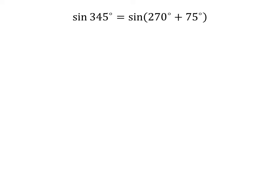345 degrees is equal to 270 degrees plus 75 degrees. So, sine of 345 degrees is equal to sine of 270 degrees plus 75 degrees.